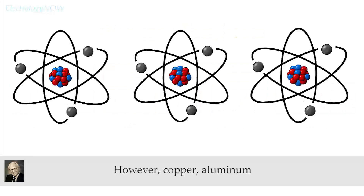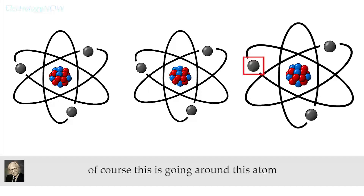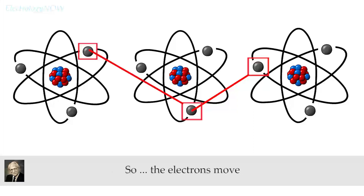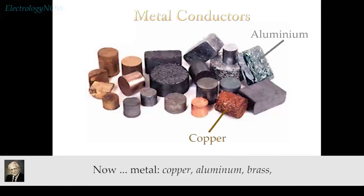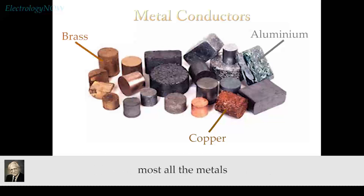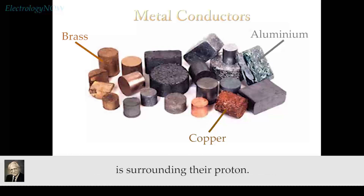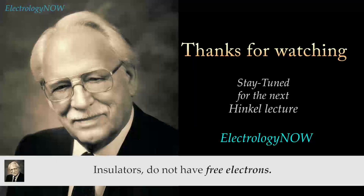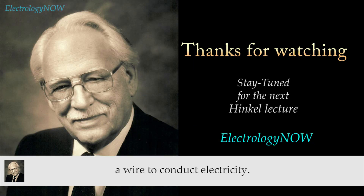Copper, aluminum, and most metals and carbon have a free interchange. In other words, an electron going around one atom wouldn't care whether it switched and went over into the next one. So the electrons move between the protons. Metals — copper, aluminum, brass, most all the metals — are not concerned over whose electron is surrounding their proton, and that's why we refer to them as free electrons; they're free to move from one place to the other. Insulators do not have free electrons, and therefore you cannot make them into a wire to conduct electricity.